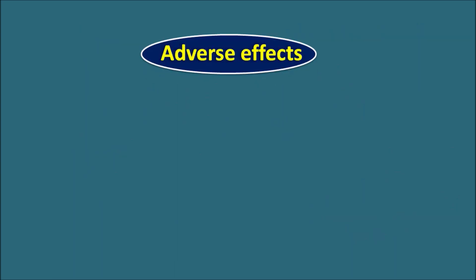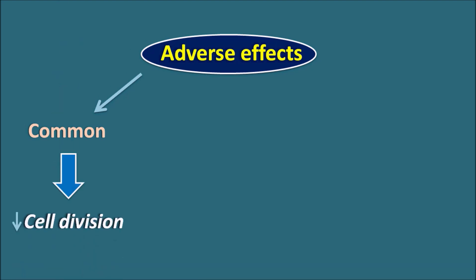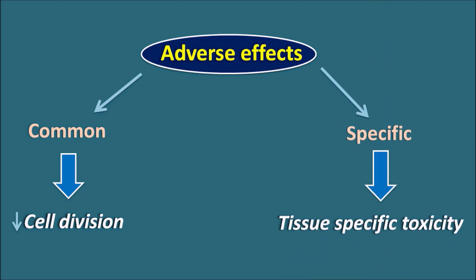The adverse effects of anti-cancer agents can be classified into two types: common side effects and specific side effects. The common side effects are mainly observed because of their action on cell division — anti-cancer agents inhibit cell division where cancerous cells are responsible for uncontrolled cell division. The specific side effects are related to tissue-specific toxicity produced by a few anti-cancer agents.